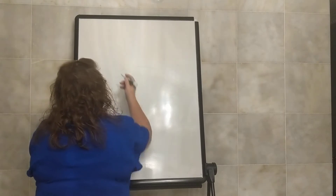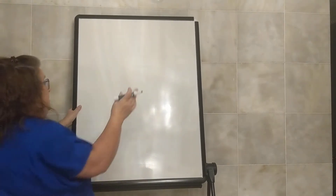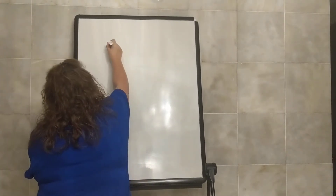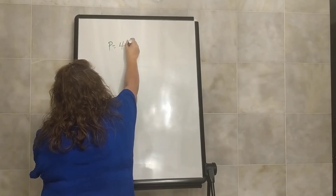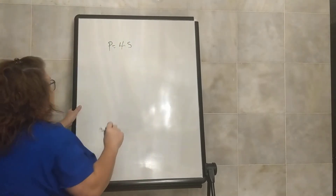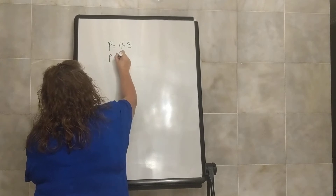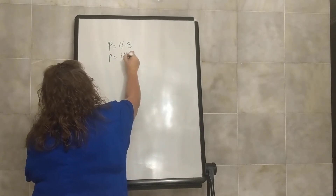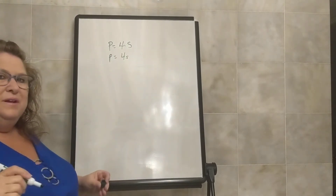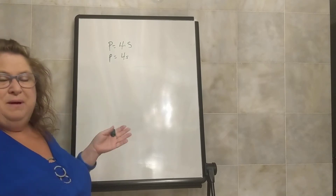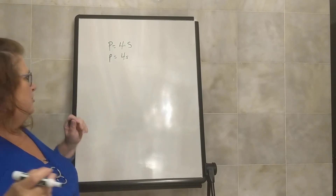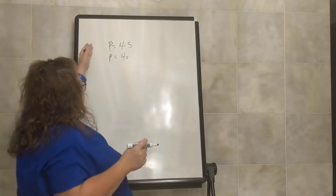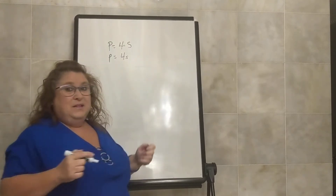We can either write — and we see this in our equations — our formula as perimeter equals four times S, or perimeter equals 4S. Remember, when we have a number and a letter right beside each other, just like in our equations, it means multiply. So you can write it either way.